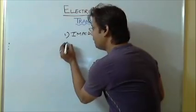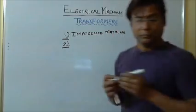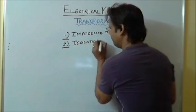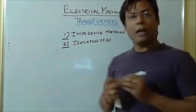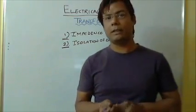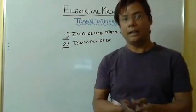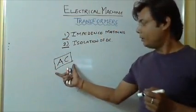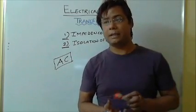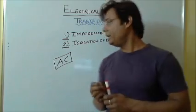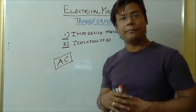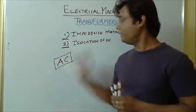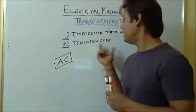Second thing which is done by a transformer is isolation of DC. We all are aware that transformer works on the principle of mutual inductance and on AC supply, that is alternating current. We may require some places like in transmission where we need to have isolation of DC from AC or from AC to DC, whatever may be the requirement.